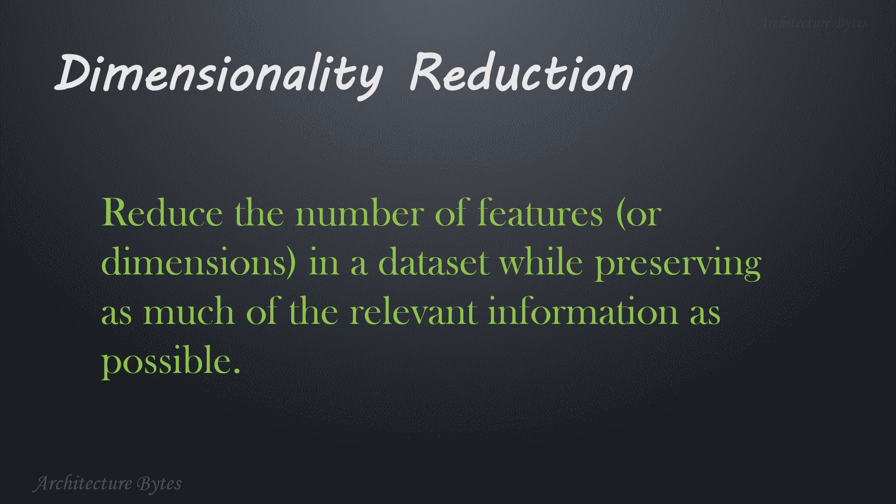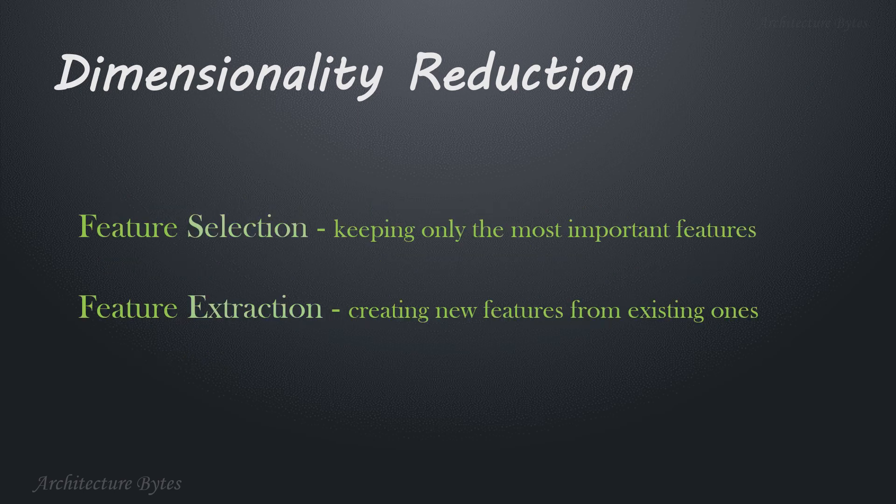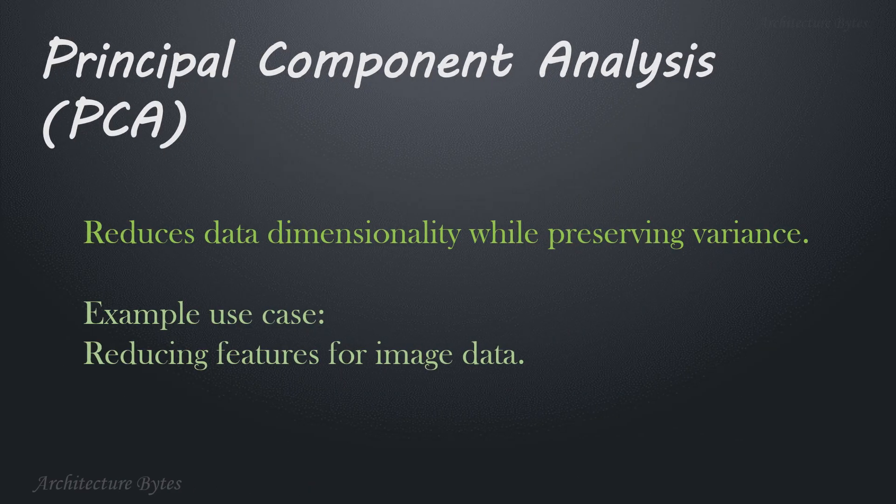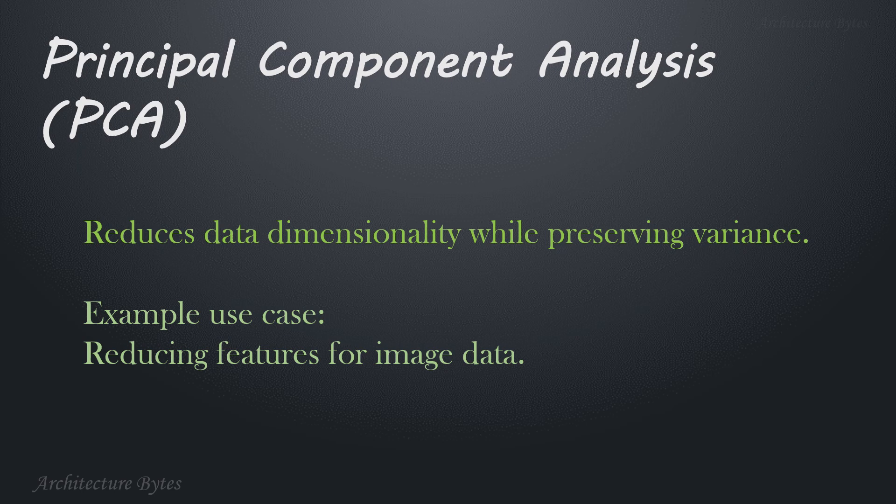Dimensionality reduction reduces the number of features or dimensions in a data set while preserving as much of the relevant information as possible. Dimensionality reduction is useful for simplifying models, reducing computation time, visualizing high dimensional data, and minimizing the risk of overfitting. Now there are two main types of dimensionality reduction techniques: feature selection, that is keeping only the most important features, and feature extraction, that is creating new features from existing ones. Principal component analysis: here we reduce data dimensionality while preserving variance. Example use case: reducing features for image data.